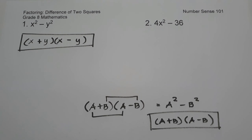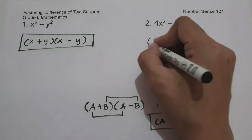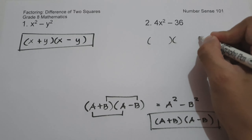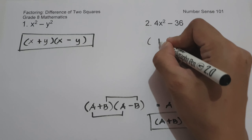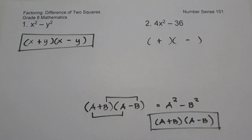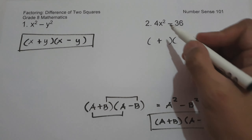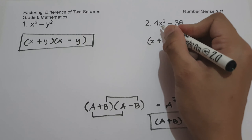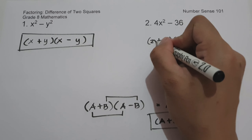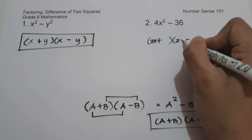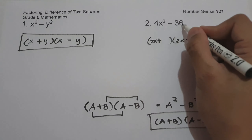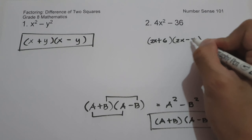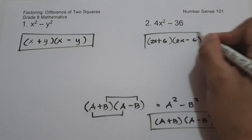On number two, we have 4x squared minus 36. Let us have the product of the sum and difference of two terms. The square root of 4 is 2, the square root of x squared is x, and the square root of 36 is 6. So the factored form is quantity 2x plus 6 times quantity 2x minus 6, and this will be our answer.